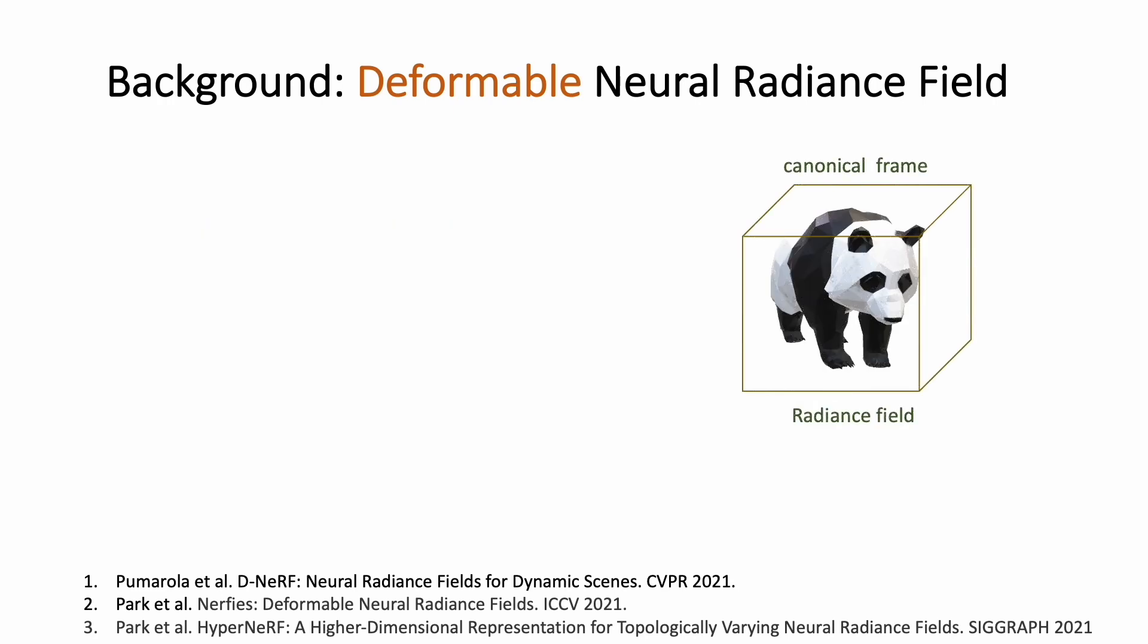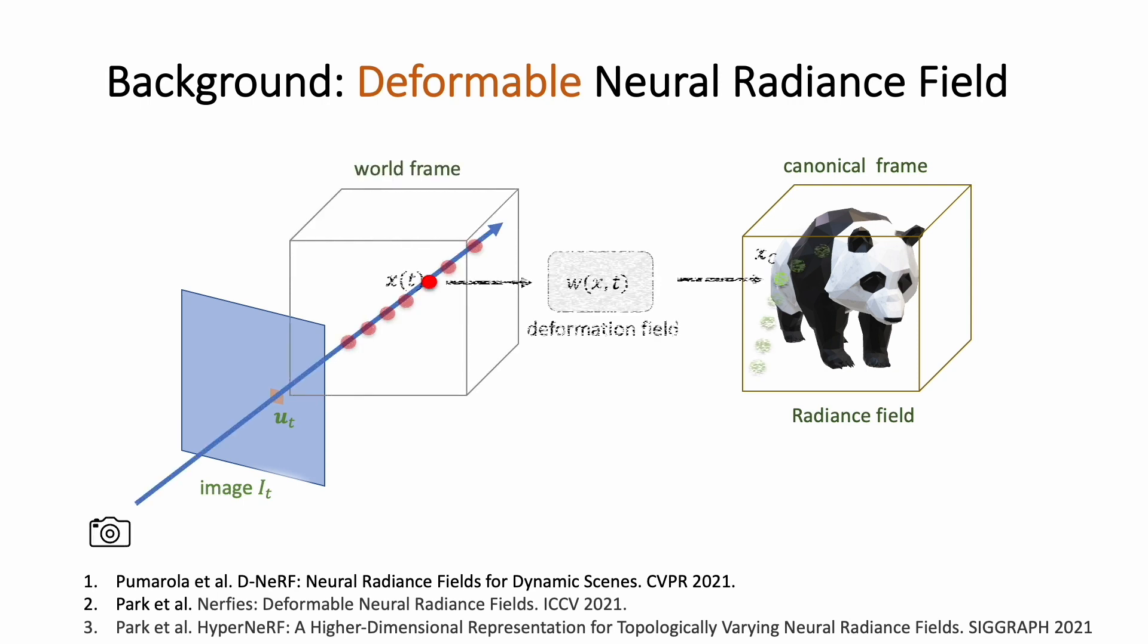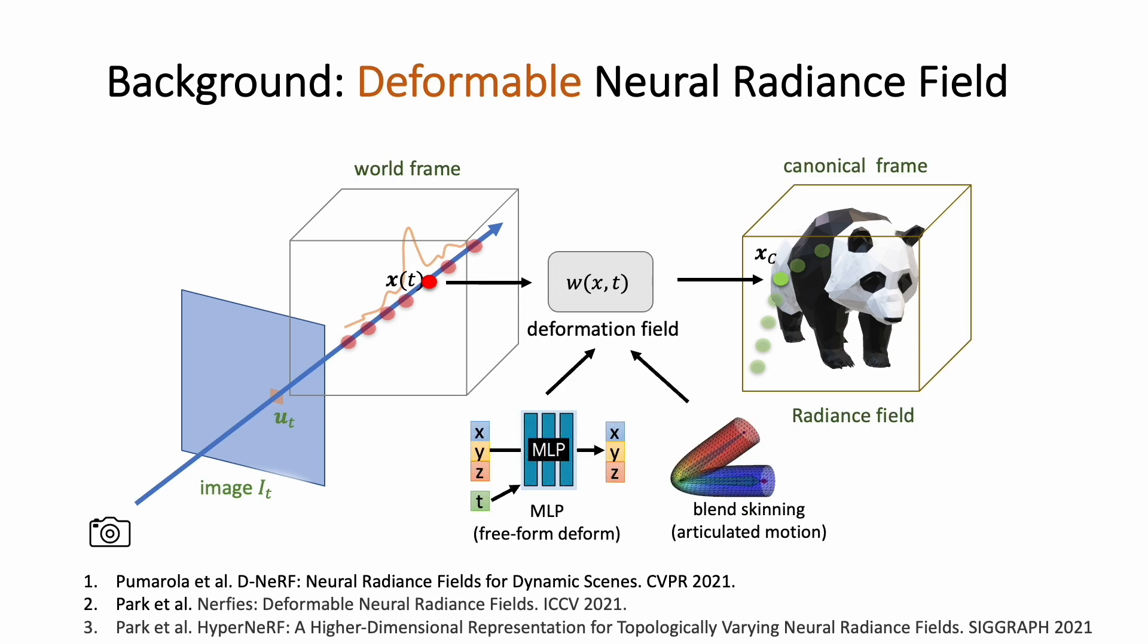Deformable NeRF represents a target scene using a static radiance field in its canonical frame. To render a pixel from a frame at time t, points along the ray are sampled and passed through a deformation field. The deformation field transforms the points to their corresponding positions in the canonical frame, allowing retrieval of radiance values for volumetric rendering. The deformation field can be represented using either an MLP or blend skinning, depending on the type of dynamic scene.